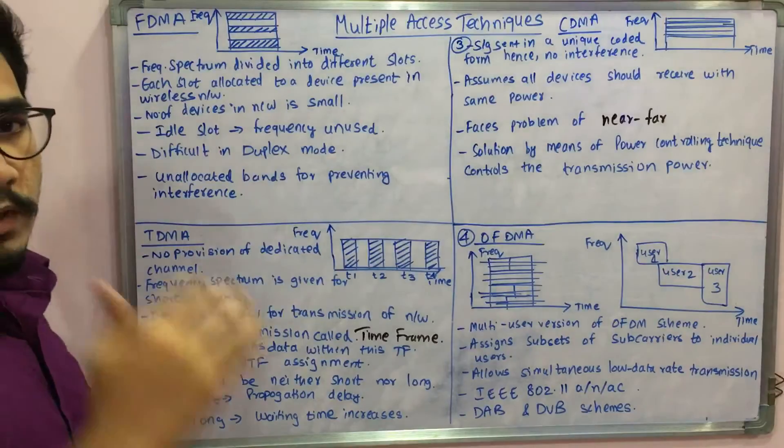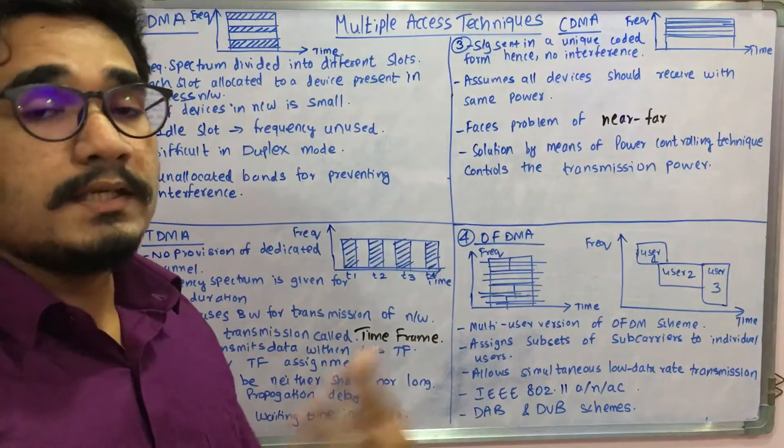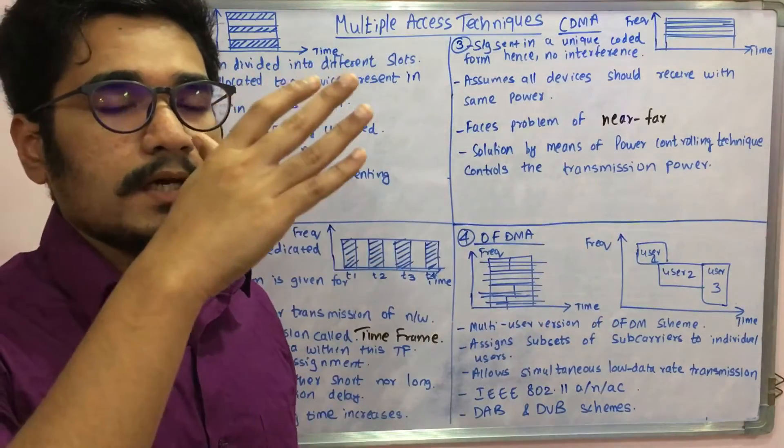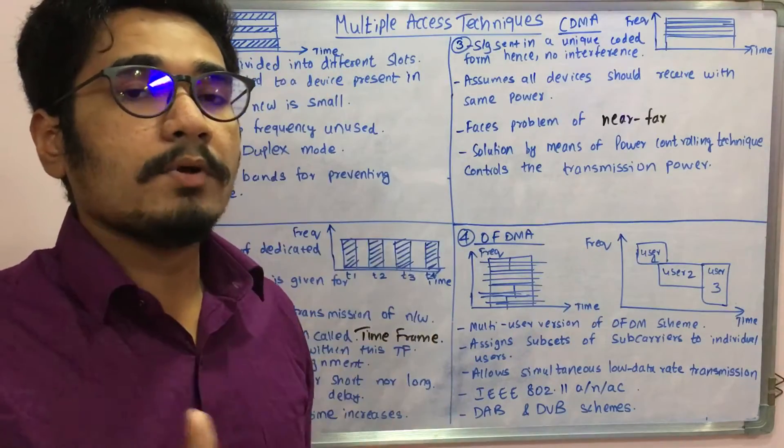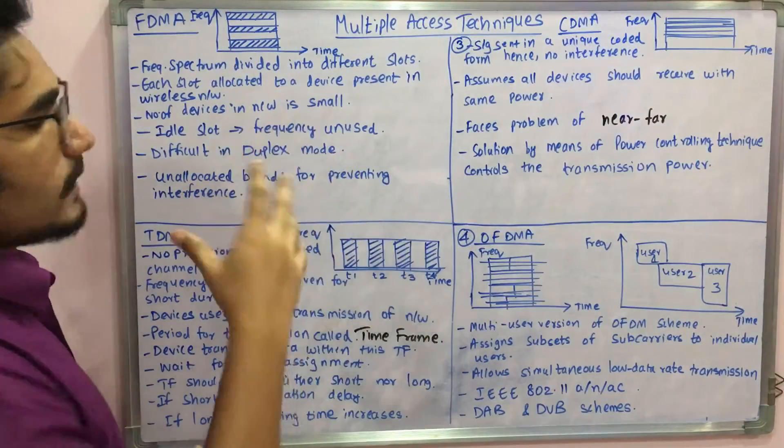The frequency spectrum, which we have seen in previous videos, is basically divided into n number of slots, and each slot is allocated to a device present in the wireless network.